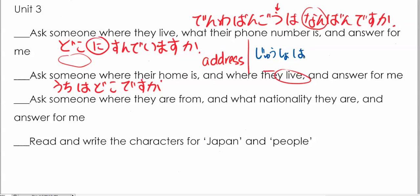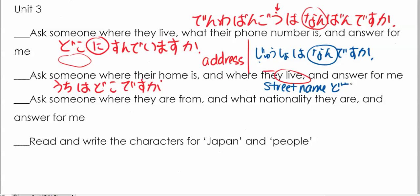For your address: 'jūsho wa nan desu ka.' Remember when you answer, you take out 'jūsho wa' and instead of the 'nan' you put the street name, then 'dori' — which means street, avenue, etc. in Japanese — followed by 'no' and then whatever number you have. To ask where someone is from: 'doko kara kimashita ka.'